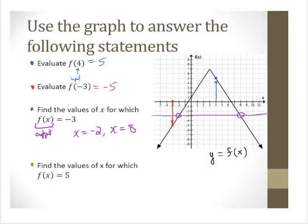Find the values of x for which f(x) = 5. Similarly, find where the output is 5 — I'll draw that horizontal line. Again, notice that it hits twice: x = 2 and x = 4. That's how we can use a graph to evaluate a function and to solve an equation involving the function.